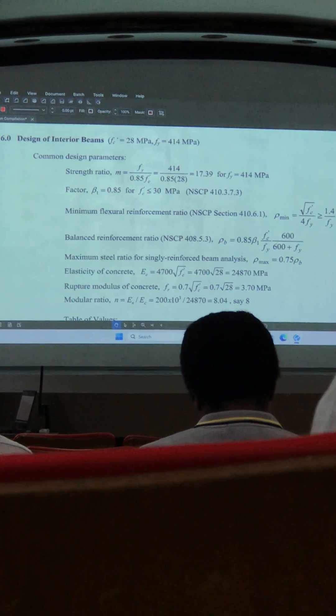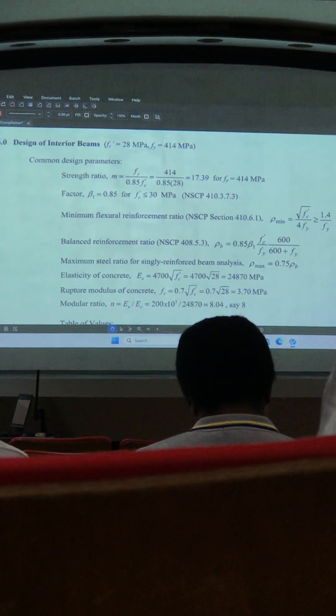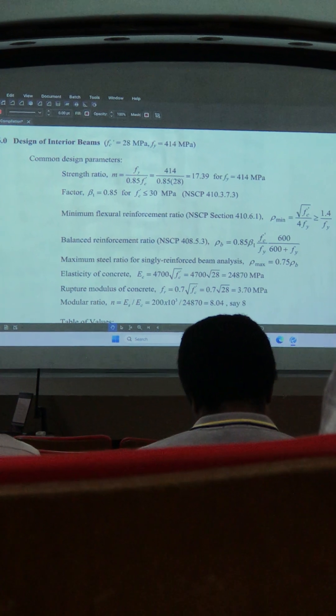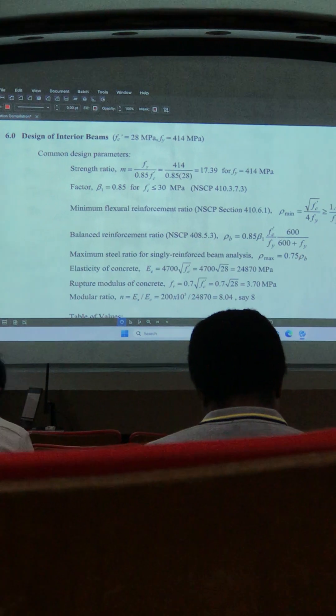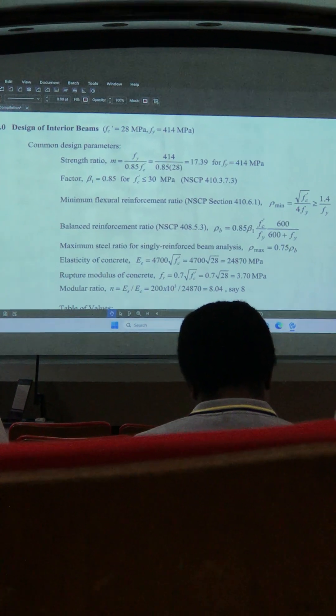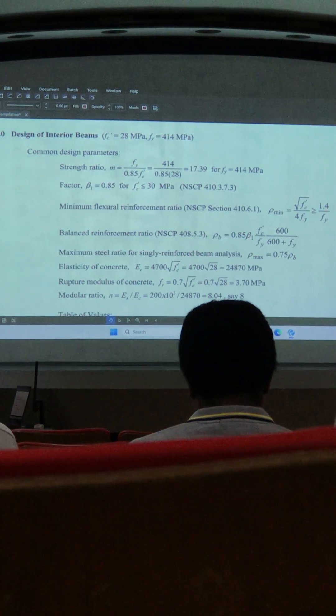For example, we have the strength ratio M, which is Fy over 0.85 FC'. Then we have factor beta, which since our concrete strength is 28 MPa, which is less than 30, then beta 1 is equal to 0.85.